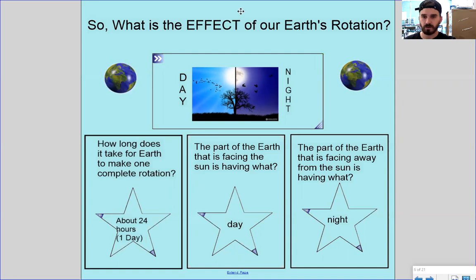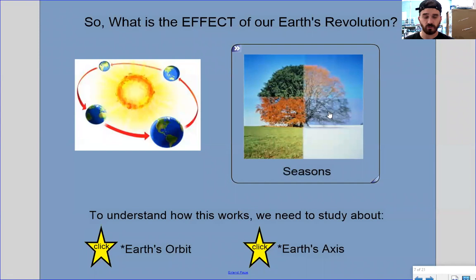Not to be confused with a revolution, which causes our seasons — we're going to talk about that in just a second. For the Earth to complete one revolution, one whole trip around the sun and for us to get all four seasons, that takes about 365 days.